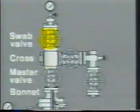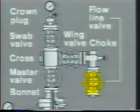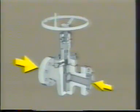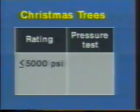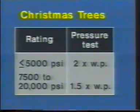The most common type of tree is the assembled tree consisting of a flange or bonnet, one or more master valves, a T or flow cross, a swab valve, a crown plug, one or more wing valves, a choke, and a flow line valve. Full opening gate valves are used for the master and swab valves and often for the other valves as well. These should not be opened when a significant differential pressure exists across the closed valves; the wing valve should be used to open and close the well for routine operations. Trees rated at 5,000 PSI and less are normally pressure tested to twice the working pressure, and trees rated at 7,500 to 20,000 PSI to 1.5 times the working pressure.